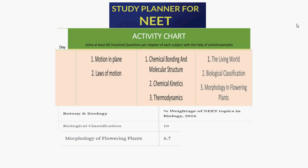For physics, I suggest you complete motion in a plane and law of motion. For chemistry, cover chemical bonding, chemical kinetics, and thermodynamics. For biology, you have to do the living world, biological classification, and morphology in plants. If you complete Day 1, the biology classification section will cover around 10% of the syllabus, and morphology of flowering plants covers 6.7%. Covering this full day will definitely improve your marks.